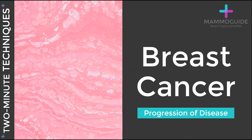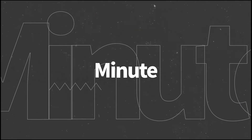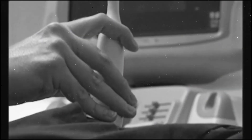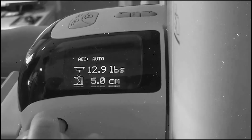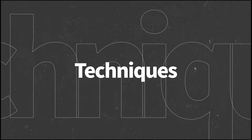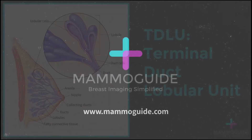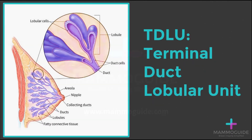How does breast cancer begin, and why are some breast cancers so aggressive while others grow so slowly? To truly understand breast cancer, you have to get down to the anatomy, and the basic anatomic structure of a breast is the terminal ductal lobular unit.